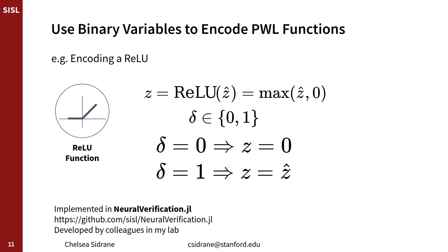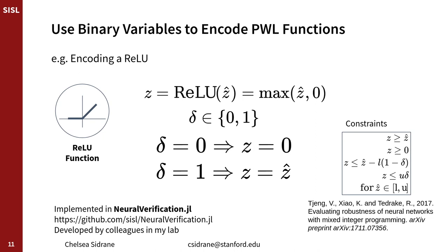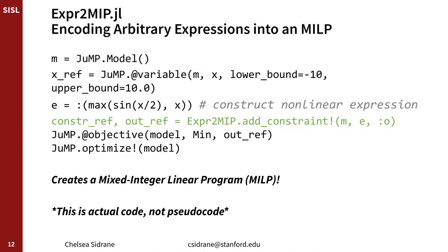If you're curious how to encode, for example, a ReLU activation function — max of x and 0 — we would use binary variables delta. If delta equals 0, then the output of the function is 0. If delta equals 1, then the output equals the input. We developed a package called expression2mip.jl, which can take a function composed of smooth nonlinear and piecewise linear functions — like max of sine(x/2) and x — and encode an over-approximation of it into a mixed integer linear program. If we run that code, we can see we get a tight lower bound on the minimum, which is good.